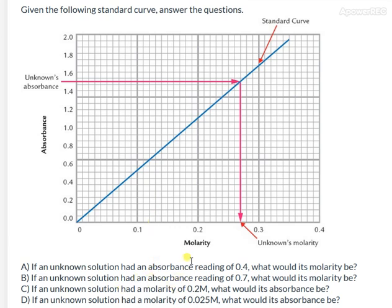If our molarity is 0.2, we go to 0.2 here, follow it up to the curve where it hits and then follow over to the side. That's about halfway between 1.0 and 1.2 so we can mark it as 1.1.